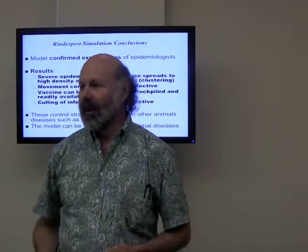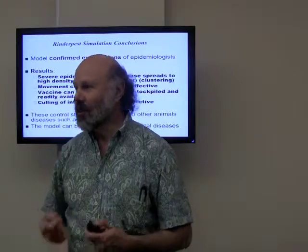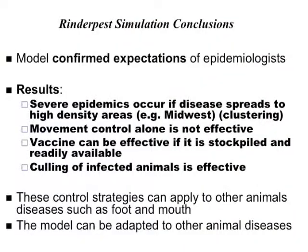What have we learned? In hindsight: severe epidemics happen if the disease ever hits the high-density regions — if it ever gets to the Midwest, it's game over. Mitigation should include immediate restriction of travel to the Midwest, including not only cattle but also trucks, since trucks can carry the disease on tires and undercarriage to other farms. Movement control alone is not effective enough; we need to do something else quickly. Vaccine is effective if stockpiled, but we don't stockpile. Culling is extremely effective and would be our main line of defense.